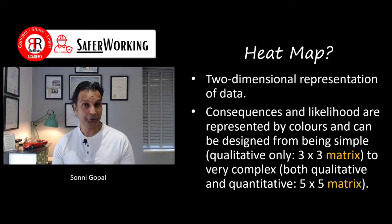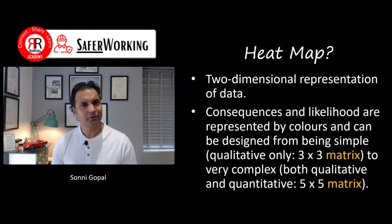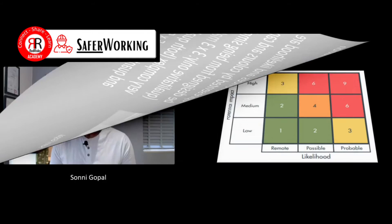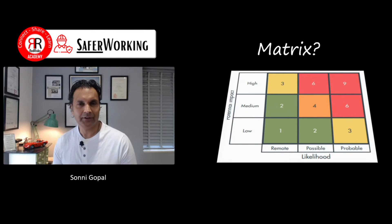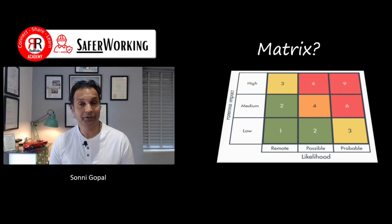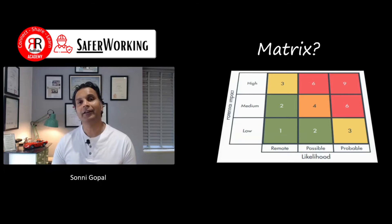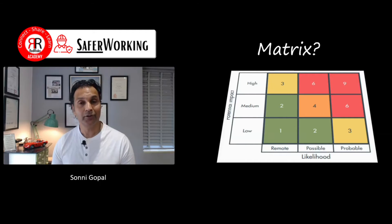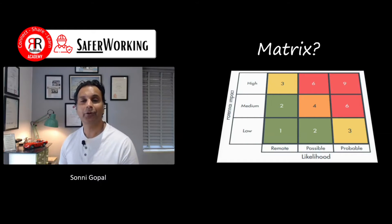The matrix can be a 3x3 or a 5x5. A matrix is effectively a grid. In a 3x3 you've got 3 rows by 3 columns. It's a representation where on the left-hand side you would have the potential impact or consequences, and along the bottom axis you would show the likelihood or the chances of occurrence.